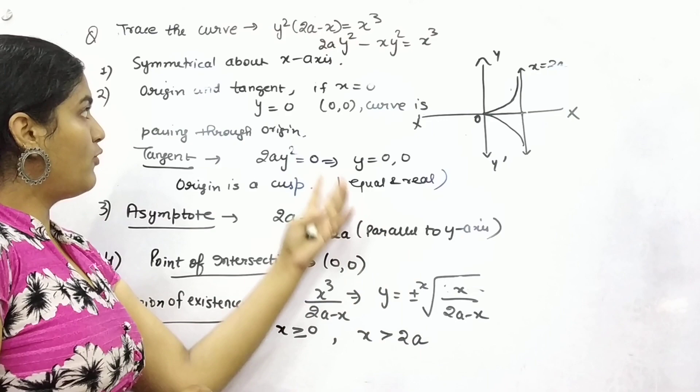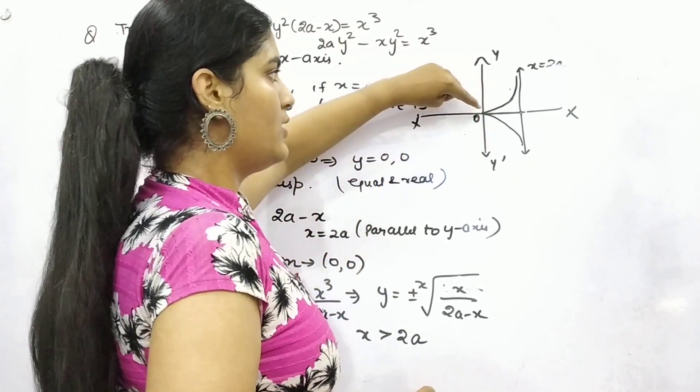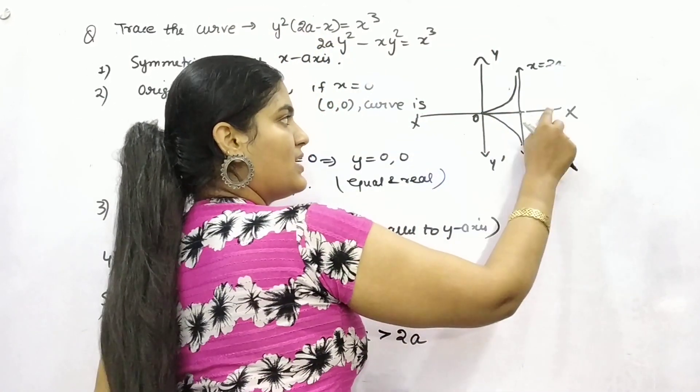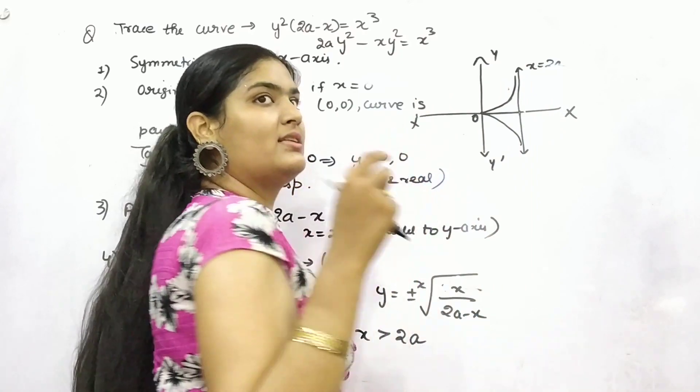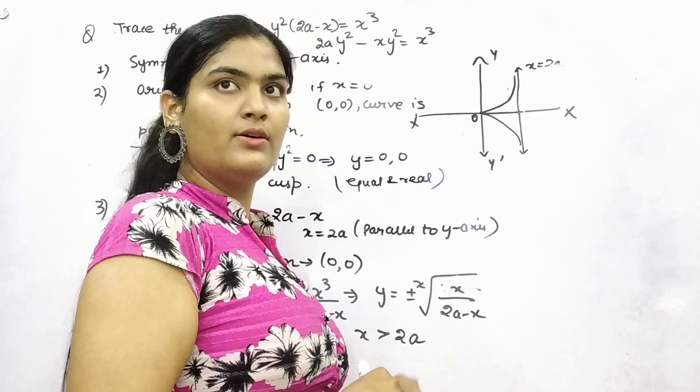Similarly, because it is symmetrical about x-axis, so you have to make it downwards as well. Symmetrical about x-axis. Take x-axis, consider x-axis as mirror. So you should have your image both of the sides.